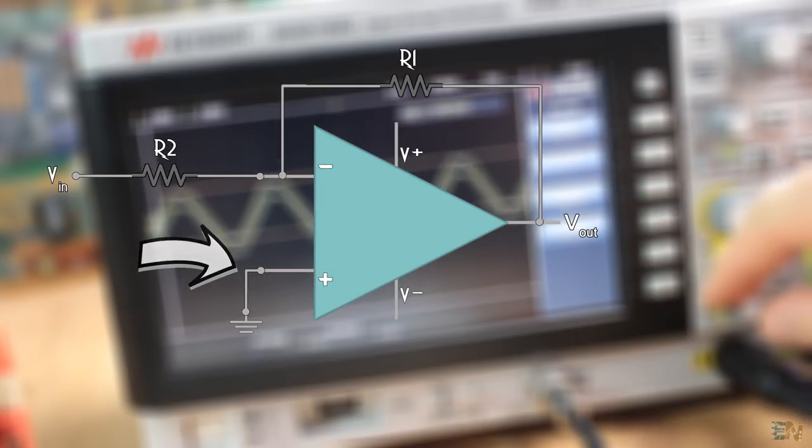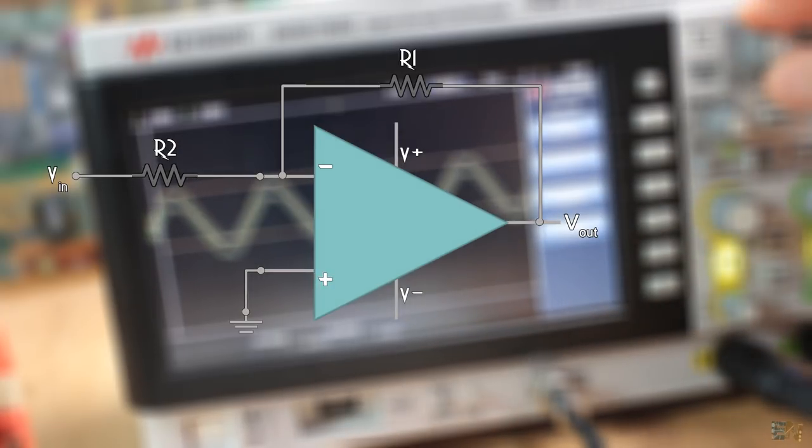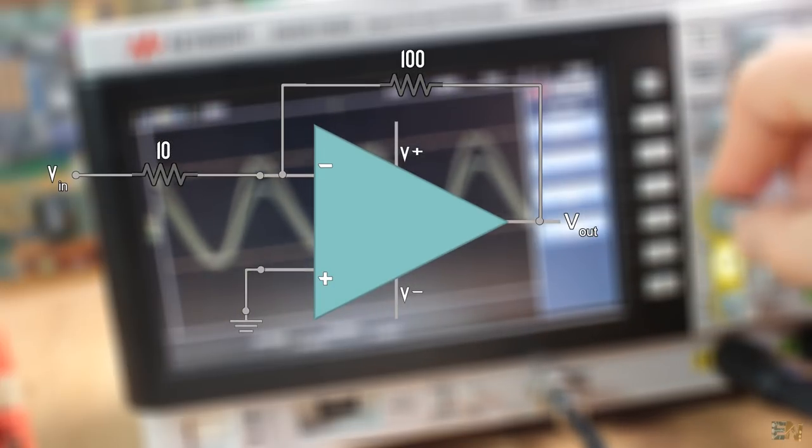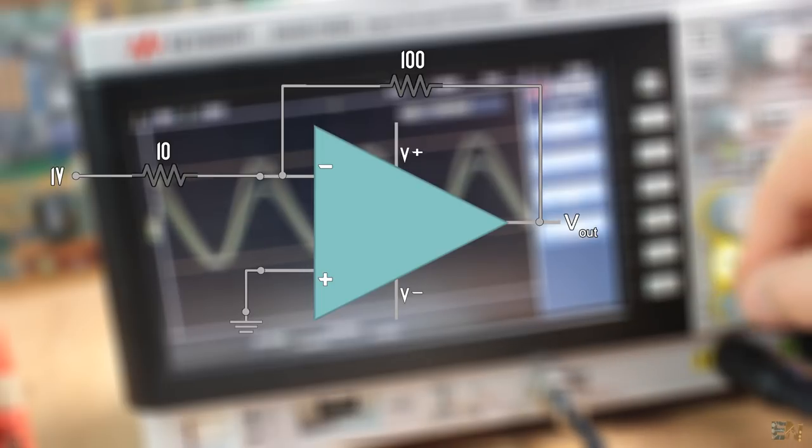Now let's apply real values, so we could better understand how this works. If the first resistor is 100 ohms and the second is 10 and we apply 1V to the input, this will happen.